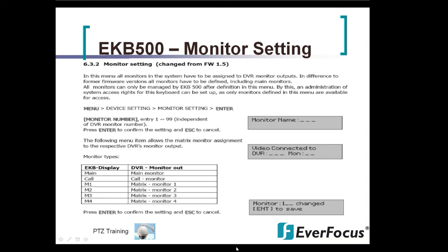Hold the shift key and hit the menu key, go down to device setting, and then under device setting select monitor setting. It's going to ask you for your monitor name — for DVR 1 you'd use monitor name 1. It's going to ask where the main monitor video is connected, so you choose DVR number 1. Then you'll look at the table and choose the main monitor, which is 'main'. You can also choose a call monitor ('call') or matrix output spot monitors 1-4 (m1, m2, m3, m4). For most cases you will be using the main option.